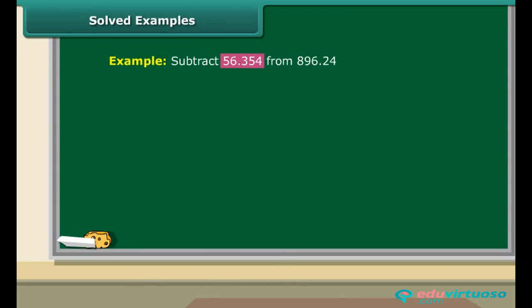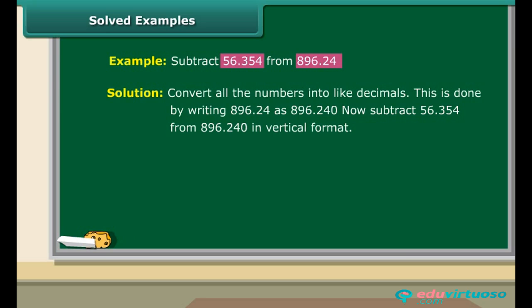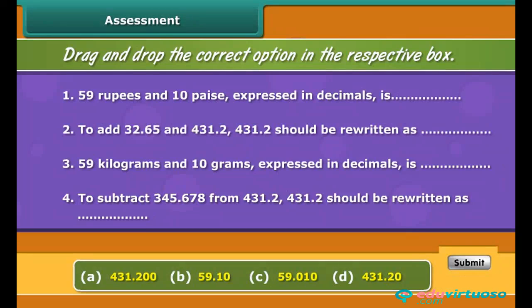56.354 and 896.24 are unlike decimals, so they must be converted into like decimals first. 56.354 has 3 decimal places, whereas 896.24 has only 2. So, 896.24 must be written as 896.240. Now let us perform the subtraction.